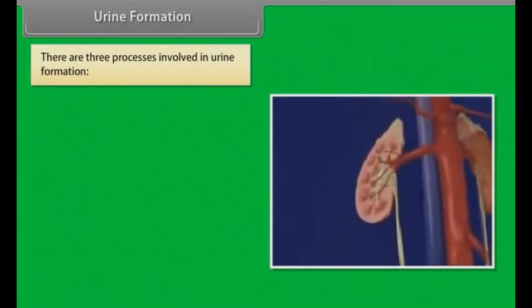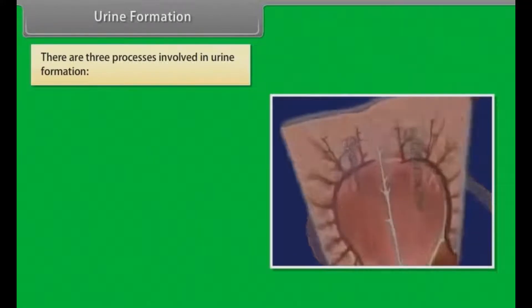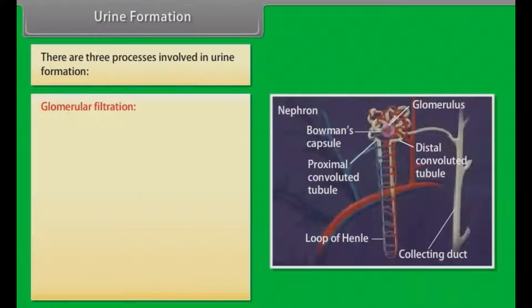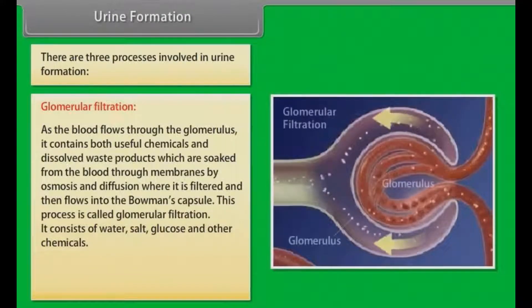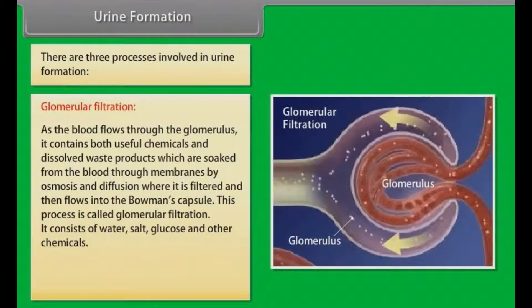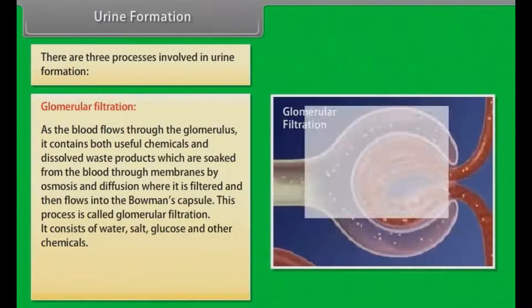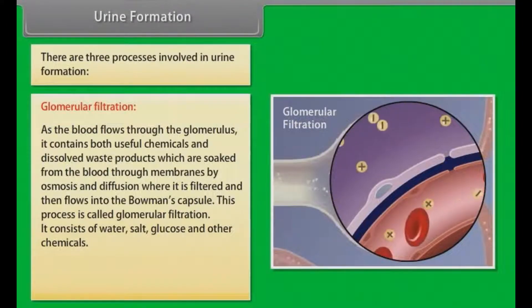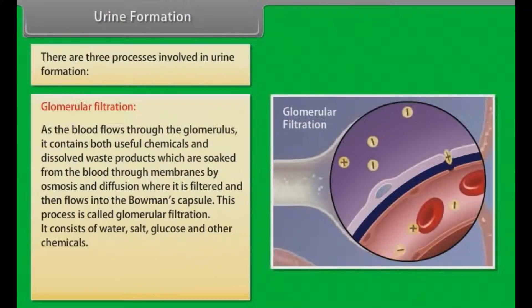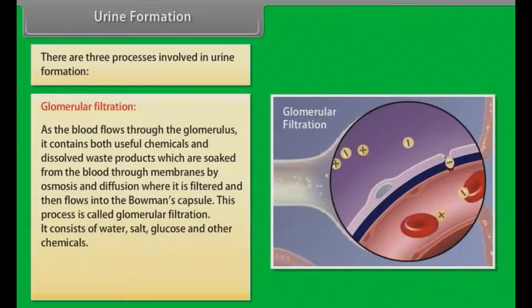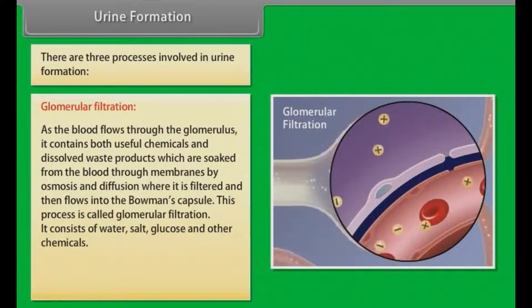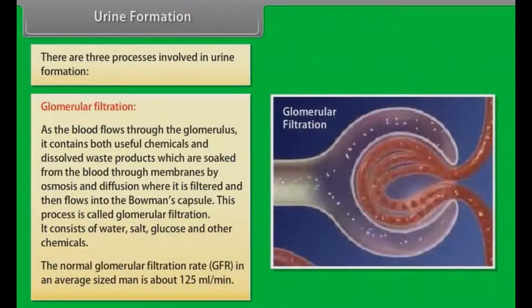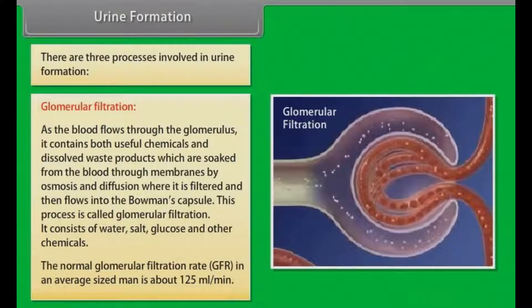Urine formation. There are three processes involved in urine formation. First is glomerular filtration: as blood flows through the glomerulus, it contains both useful chemicals and dissolved waste products, which are filtered through membranes by osmosis and diffusion into the Bowman's capsule. The filtrate consists of water, salts, glucose and other chemicals. The normal glomerular filtration rate (GFR) in an average-sized man is about 125 ml per minute.